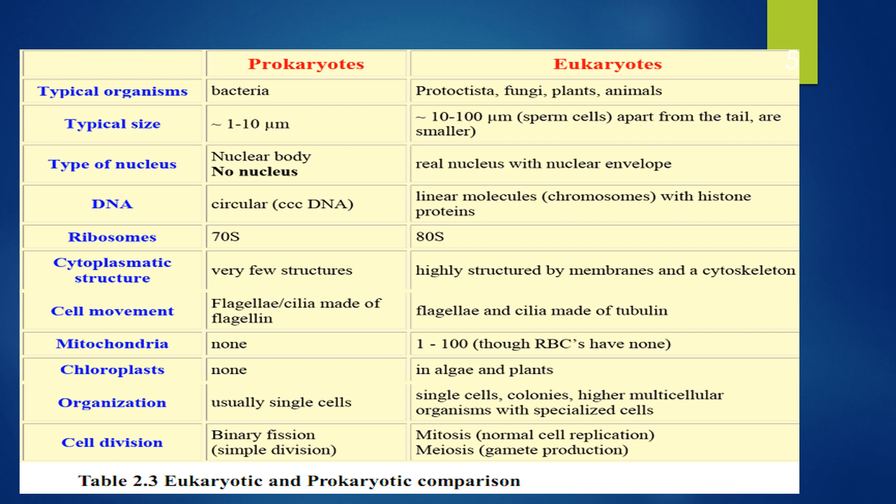The Eukaryotic cell is highly structured by the membrane and the cytoskeleton. This is the structure of the membrane. This is the structure of cell movement. This is the structure of the cell.